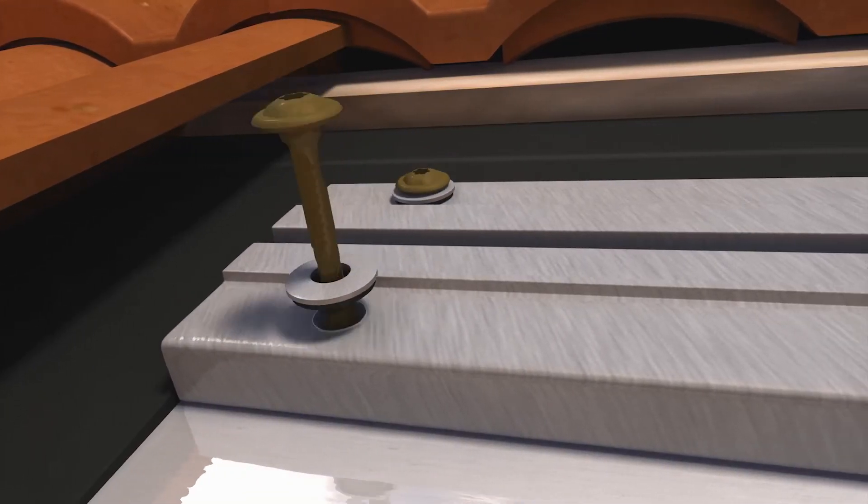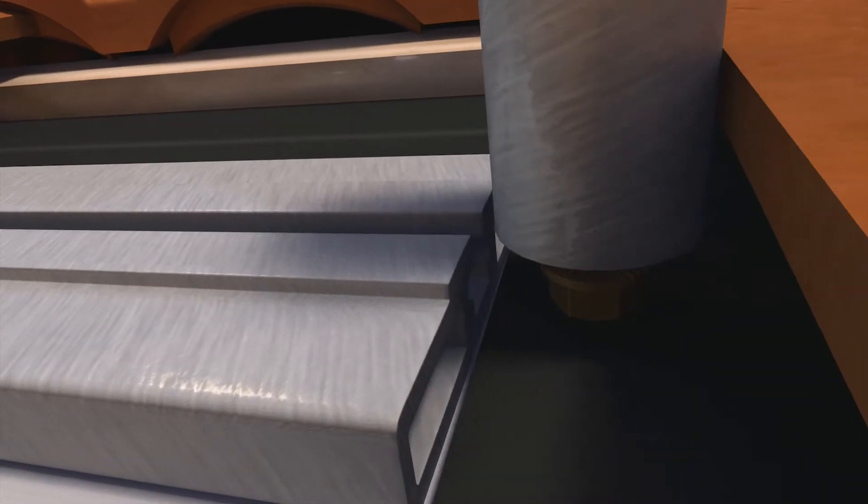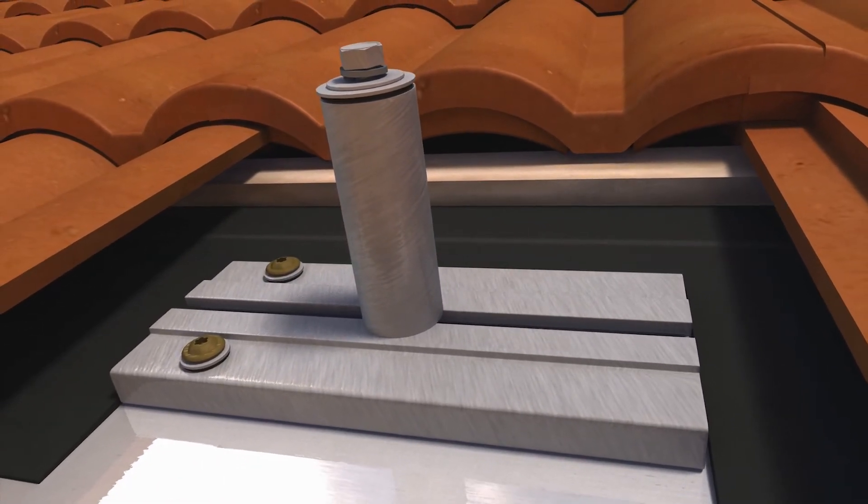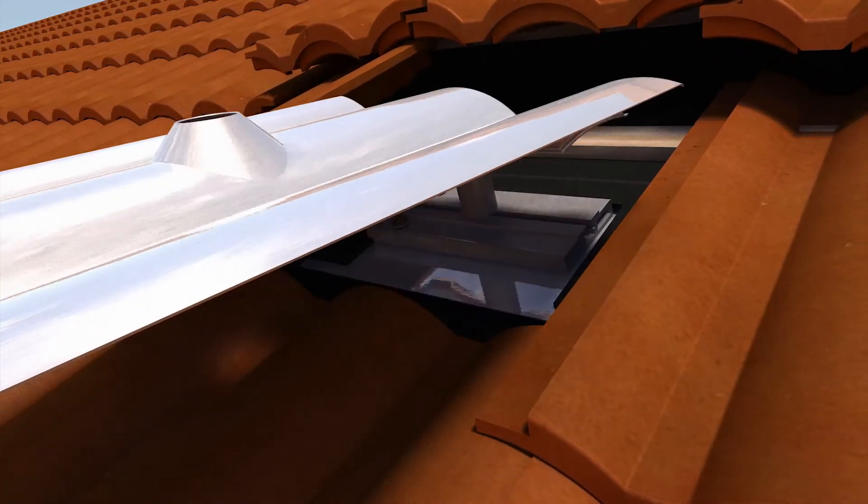Simply fasten the mount to the rafter with the lag bolts provided and slide the post into the groove on top of the mount. The post is adjustable and can be slid to line up with a hole on the replacement flashing.